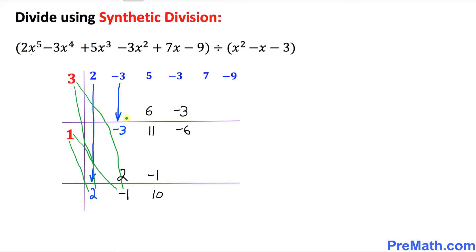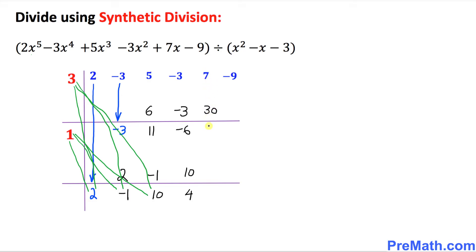Let's start this process again. Multiply this 1 with 10 — 1 times 10 is going to be positive 10, right up here. Likewise, I'm going to multiply 3 times 10 — 3 times 10 is 30, so 30 is going to show up on the top. Let's add these: negative 6 and 10 is going to make 4 at the bottom, and 7 and 30 becomes 37.